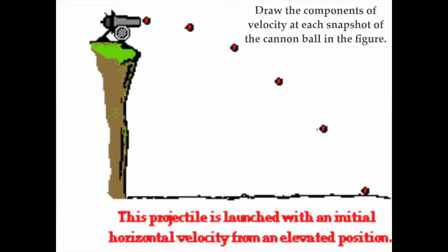Can you apply knowledge of components in this situation? A cannon shoots a cannonball directly horizontally off a cliff. I want you to determine what the components of velocity — not the entire velocity vector, just the components — would look like at each of six snapshots. The total velocity vectors increase in size. Pause the video now, take a minute, and draw the horizontal and vertical components for each snapshot, including the instant just before it hits the ground.